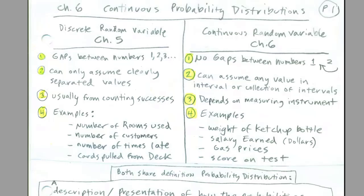Chapter six, continuous probability distributions. We want to remind ourselves where we came from. Chapter five, we did discrete random variable and discrete probability distributions. Now we're going to move on to continuous. Let's remind ourselves of discrete random variables. Remember, there were gaps between numbers: one, two, three. We were mostly counting. Discrete random variables can only assume clearly separated values, usually from counting successes.